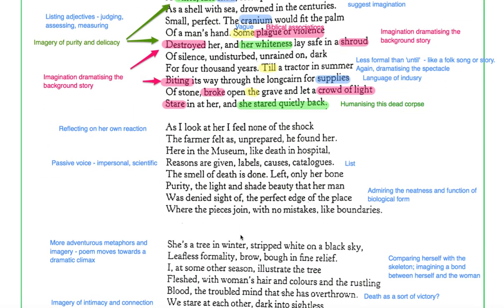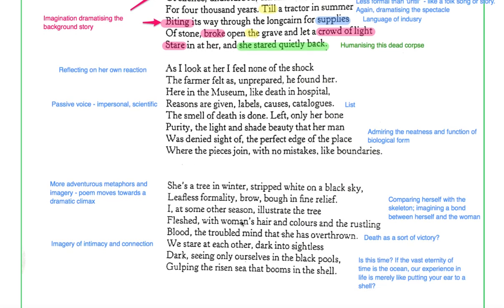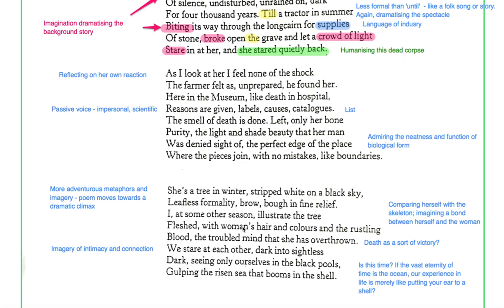And she stared quietly back. So she's personifying the corpse. I mean obviously the corpse didn't really stare back but she's personifying it, she's humanizing the corpse. She's already started doing that really by referring to her, destroyed her, and imagining her. Now I haven't annotated these other stanzas in quite the same level of detail and I think that's something really if you're studying this poem for you to do independently. But I will kind of go through the rest of the poem with you. So, at this point, she, Gillian Clarke or her voice, is now placed in the scene. It's the first time that the voice of the poem or the person behind the voice has had any agency. As I look at her I feel none of the shock the farmer felt as unprepared he found her. Okay, so she didn't feel shocked but she's reflecting on her own reaction.